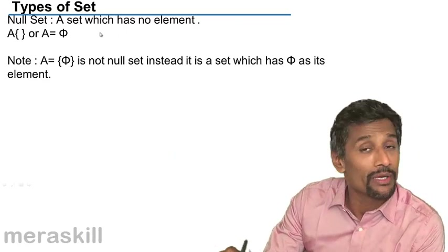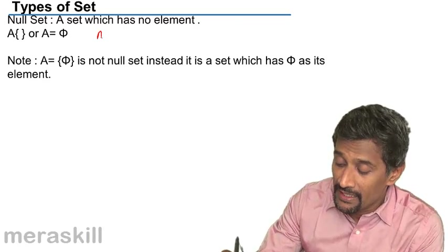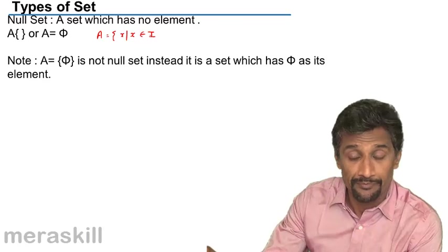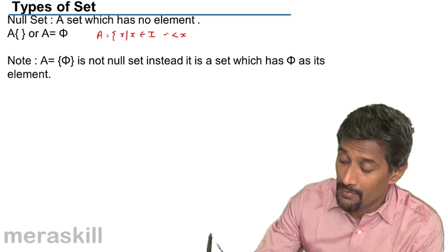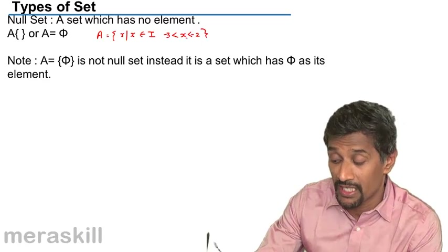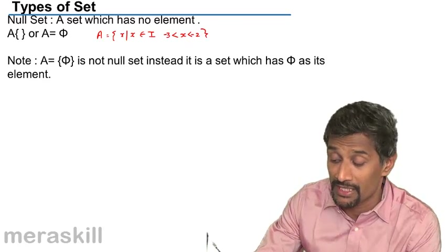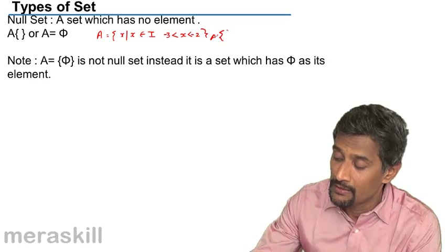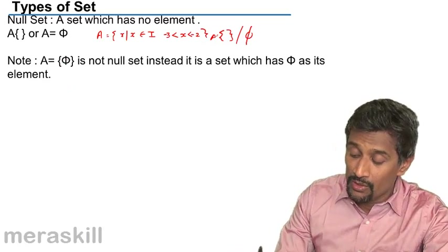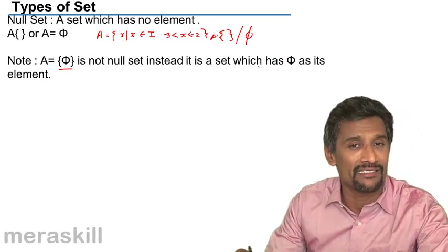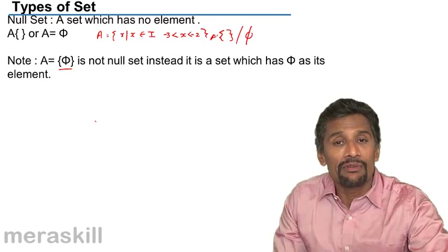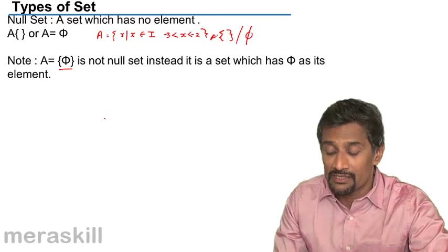A null set is a set which has no element. For example, the set of integers x such that x is between -3 and -2 (greater than -3 but less than -2): there are numbers between -3 and -2 but they are rational, not integers, so A is a null set, written as phi. Note: {phi} written with braces is not a null set — it is a set which has phi as its element. So we covered null set, disjoint sets, equal sets, equivalent sets, finite sets, and infinite sets.